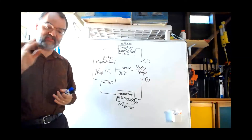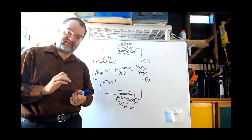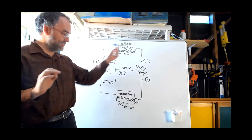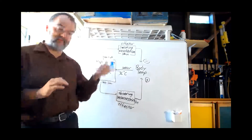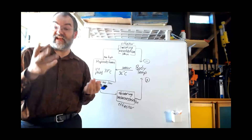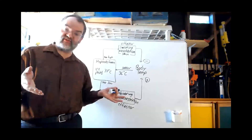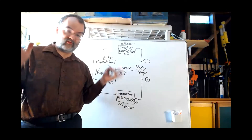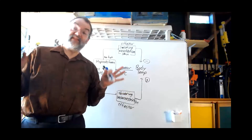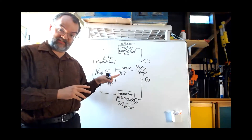Throughout this course you will see multiple negative feedback systems. I'll try to point them out when I see them and occasionally draw them up with this kind of diagram. When we get to the endocrine system there are several; the kidneys use several. They're all over the place because this is a good way to maintain homeostasis.